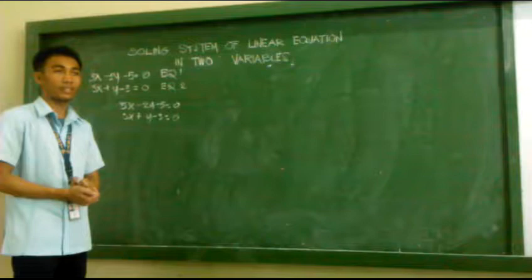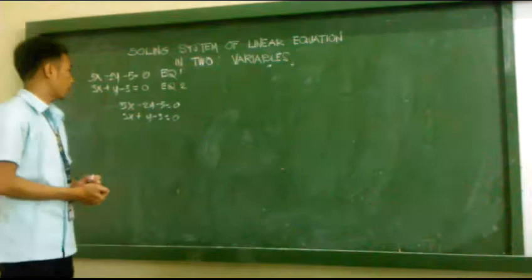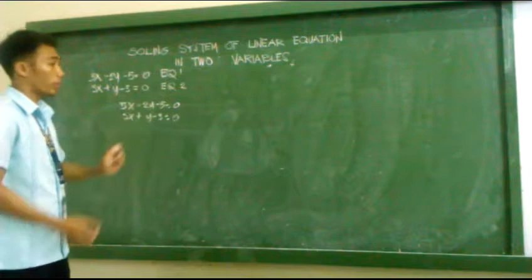So, the positive y in equation 2 should be multiplied by positive 2 so that in equation 1 we will have negative 2y, and in equation 2 we will have positive 2y.